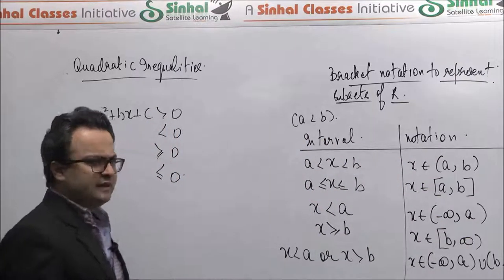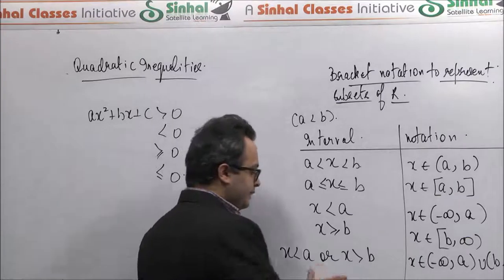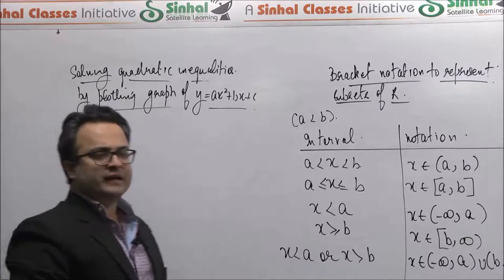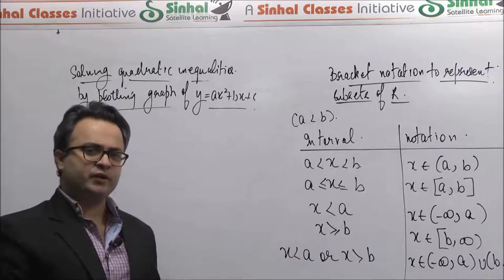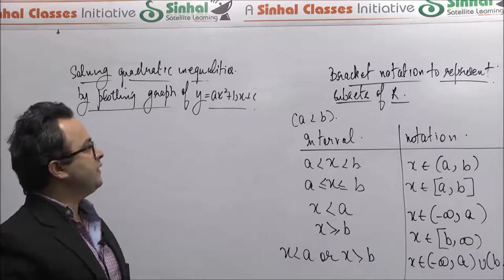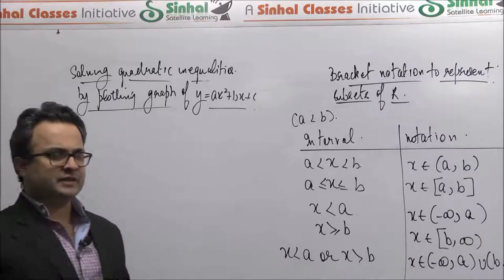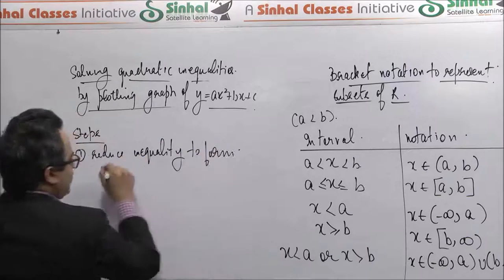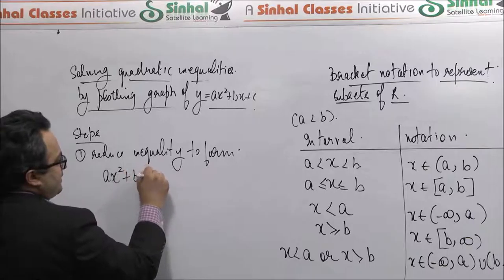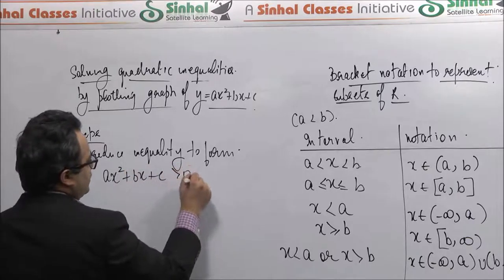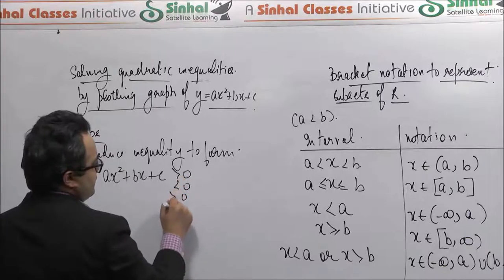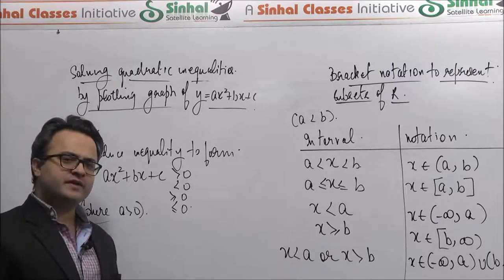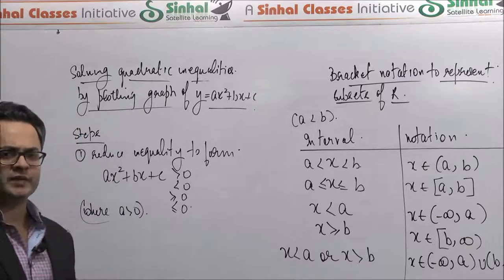That is the bracket notation. You can represent your solution set in inequality form or using bracket notation. Any quadratic inequality can always be solved by plotting the graph of the corresponding quadratic expression. We can come up with some basic steps. As a first step, we reduce the inequality to the form ax squared plus bx plus c positive or negative — reducing all terms to one side with the coefficient of x squared positive.